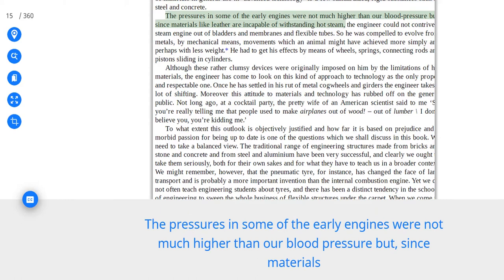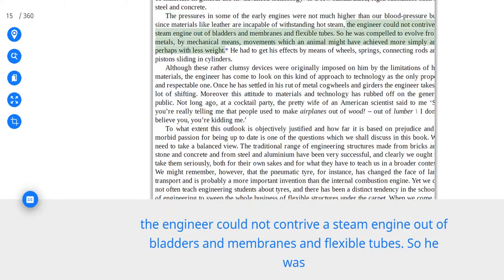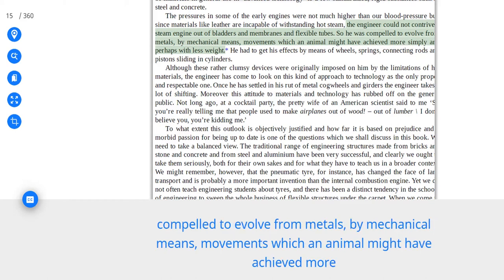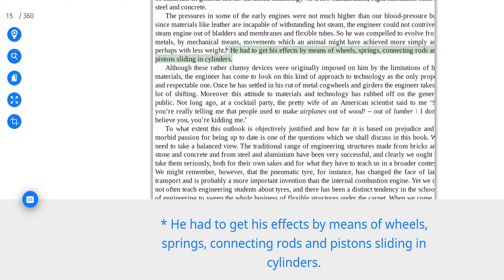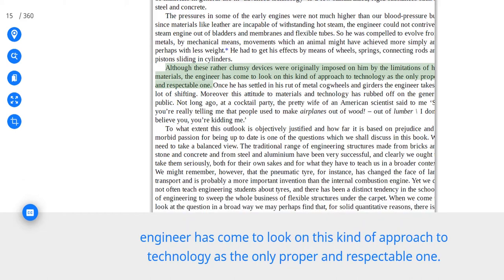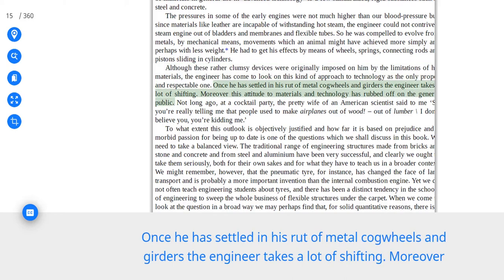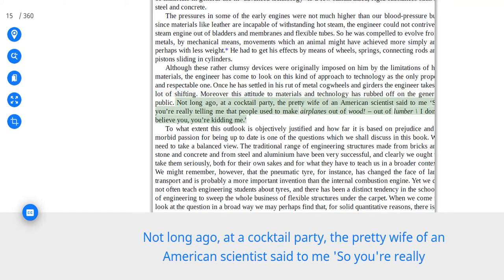The pressures in some of the early engines were not much higher than our blood pressure but, since materials like leather are incapable of withstanding hot steam, the engineer could not contrive a steam engine out of bladders and membranes and flexible tubes. So he was compelled to evolve from metals, by mechanical means, movements which an animal might have achieved more simply and perhaps with less weight. He had to get his effects by means of wheels, springs, connecting rods, and pistons sliding in cylinders. Although these rather clumsy devices were originally imposed on him by the limitations of his materials, the engineer has come to look on this kind of approach to technology as the only proper and respectable one. Once he has settled in his rut of metal cogwheels and girders the engineer takes a lot of shifting. Moreover this attitude to materials and technology has rubbed off on the general public.